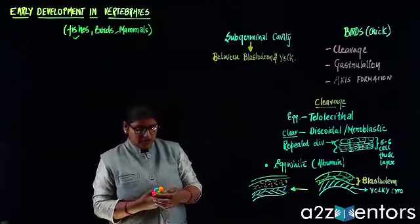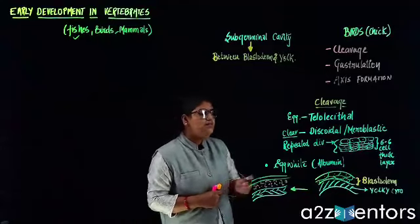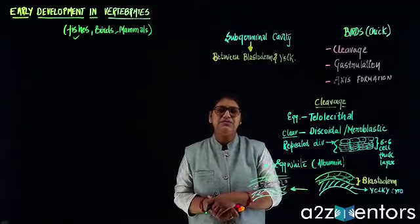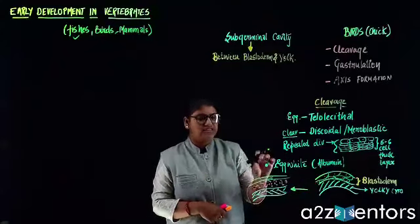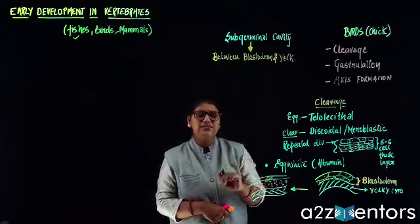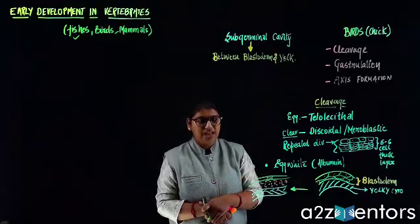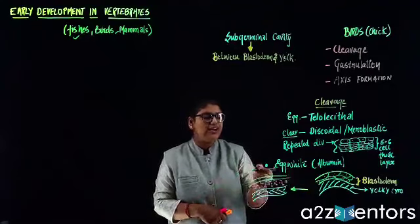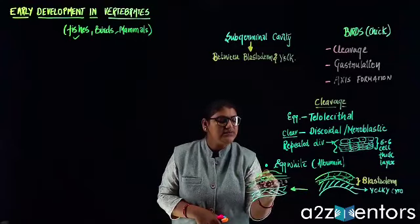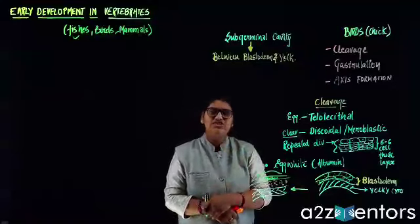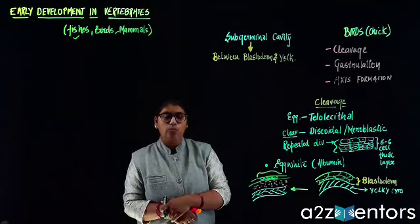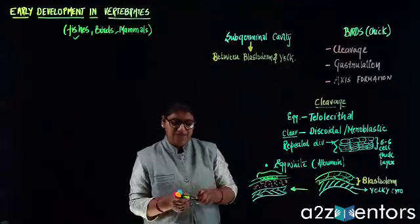Apart from that, you have some deep cells in the middle of this blastodermal region. At the stage when the sub-germinal cavity is being created, these deep cells are going to slough off — they're going to shed off. When there is shedding of these deep cells, the entire middle area becomes clear.